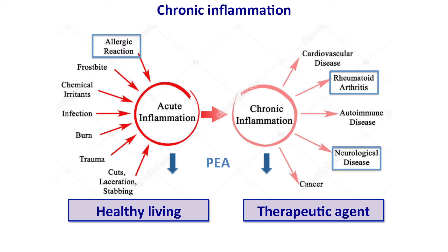This suggests that therapeutic agents for chronic inflammation should find ways of raising the levels of PEA—for example, PEA itself, or agents that raise it through some other mechanism. My lab is interested in developing inhibitors for the enzyme that destroys PEA, and those inhibitors are very good at increasing PEA levels, but this is a drug.